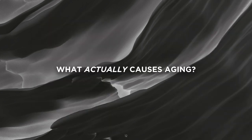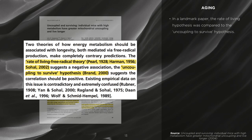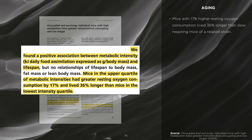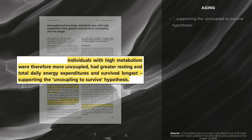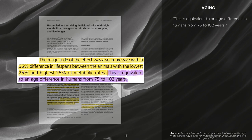What actually causes aging? In a landmark paper, the rate of living hypothesis was compared to the uncoupling to survive hypothesis. The uncoupling to survive hypothesis postulated that a higher metabolic rate led to increased longevity. It was found that mice with a 17% higher resting oxygen consumption lived 36% longer than slow-respiring mice of a related strain, supporting the uncoupling to survive hypothesis. This is the equivalent to an age difference in humans from 75 to 102 years.